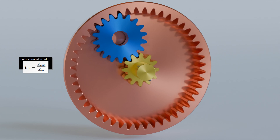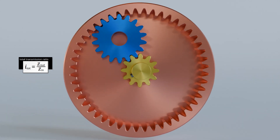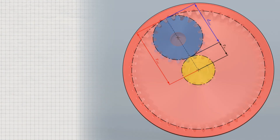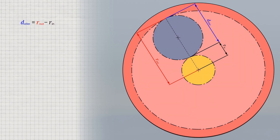Usually, the rotational axes of the input and output shafts are not aligned but are offset. However, by properly selecting the diameter and therefore the number of teeth of the idler gear, it is possible to ensure that the input shaft of the yellow gear and the output shaft of the red ring gear are aligned on a common axis of rotation. At this point, we use the previously explained fact that the number of teeth of the idler gear has no influence on the overall transmission ratio anyway and can therefore be chosen as desired.